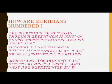Now let us learn how meridians are numbered. The meridian that passes through Greenwich, which is known as the prime meridian, has a value of zero degrees. Greenwich is a place near London where the prime meridian passes. Meridians are always measured up to 180 degrees east or west from the prime meridian. The meridians towards the east are represented with the capital letter E, and the meridians towards the west are represented with the capital letter W.